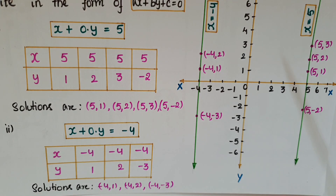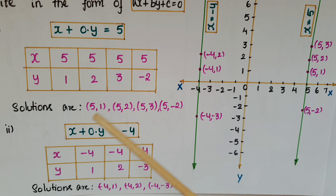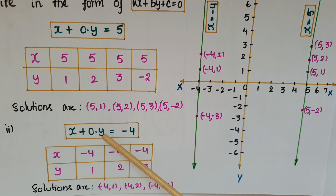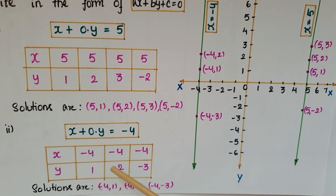The next equation is x = -4. Write it in the form ax + by + c = 0, that is x + 0·y = -4. Find solutions: here x is always -4 and y can be any real number. I have taken y values 1, 2, and -3, giving solutions (-4,1), (-4,2), and (-4,-3).